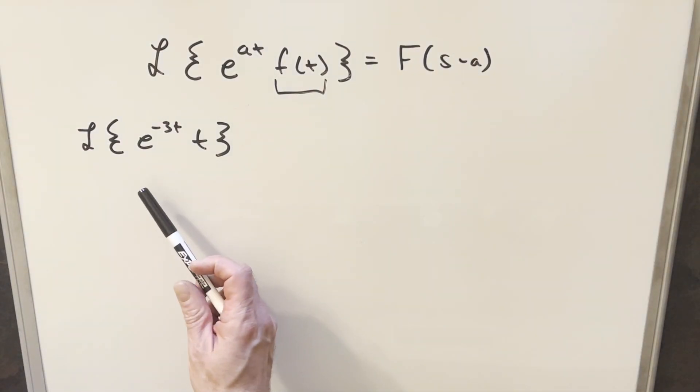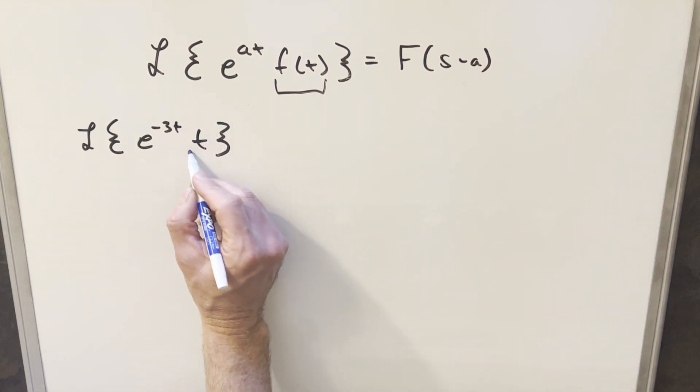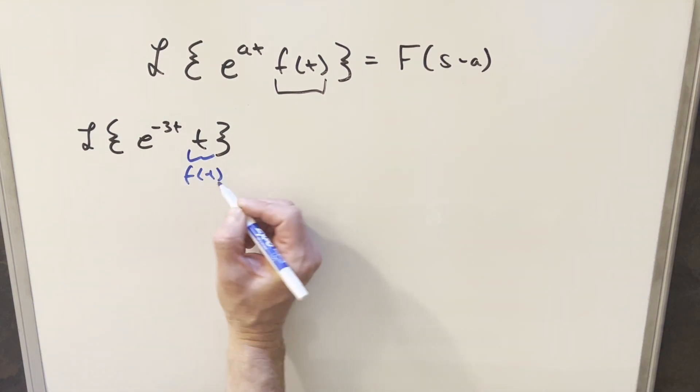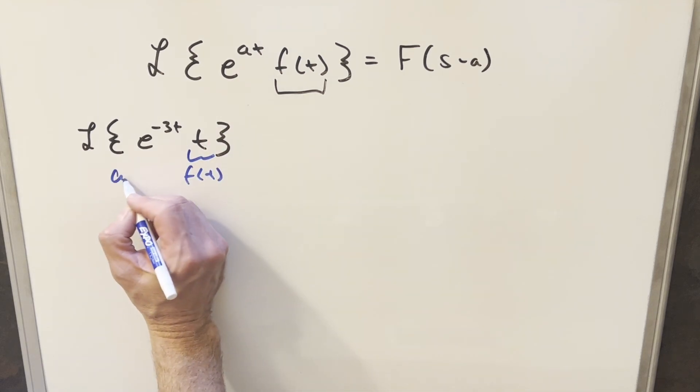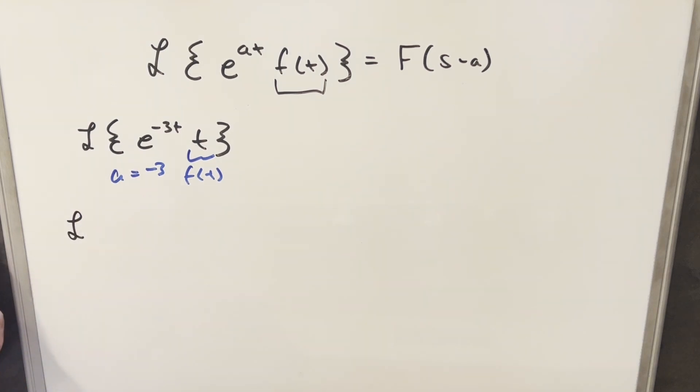Okay, for this one, we've got the Laplace transform of e to the minus 3t times t. And in this case, this t is just going to be our whole f of t, our a value in this is going to be minus 3. So again, we'll start with our f of t. So we want to find Laplace of f of t. And this is going to be just the Laplace of t. This is going to be our big f of s function. But we did this one in a previous video, this is actually just 1 over s squared.